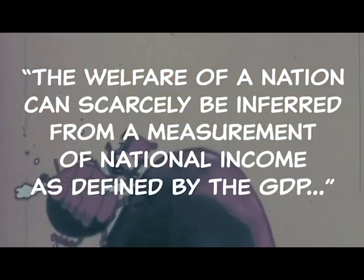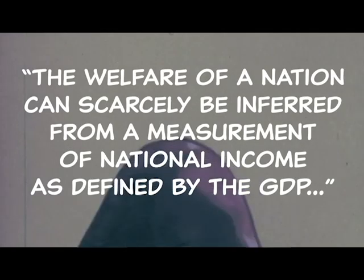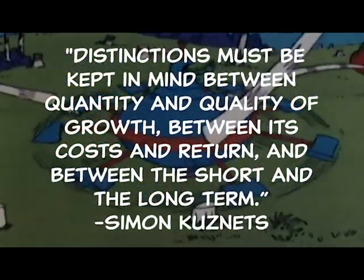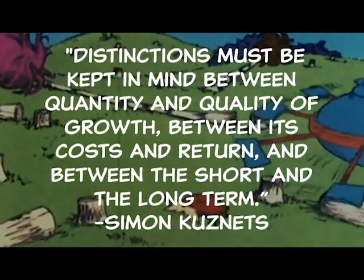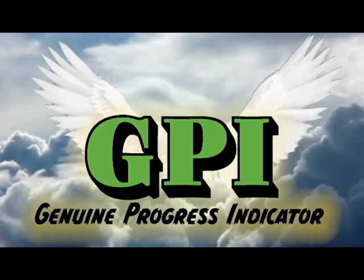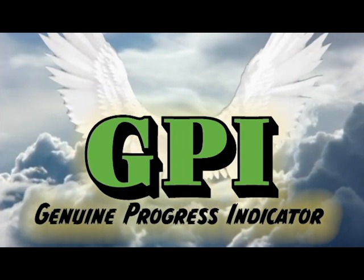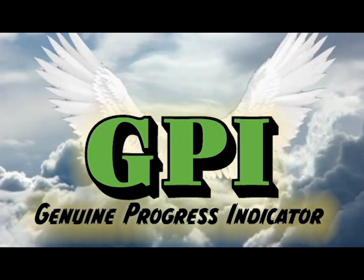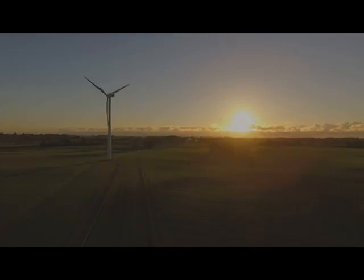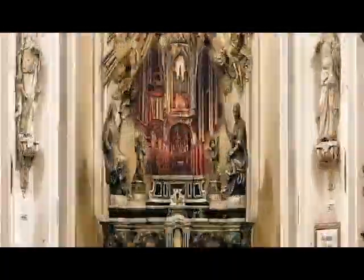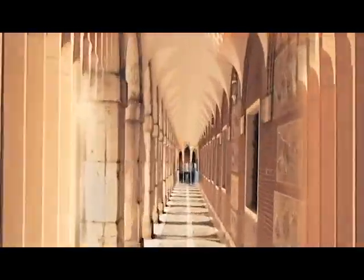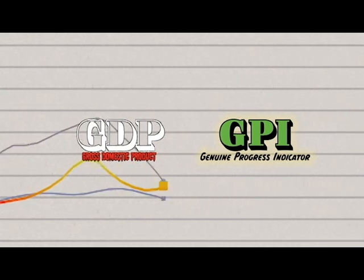The deficiencies in the gross domestic product were being identified by a number of people. The original inventor, Simon Kuznets, identified deficiencies in the gross domestic product as a measurement of economic well-being, and many others identified them throughout the years. In the late 1980s through mid-1990s, what was eventually devised was the Genuine Progress Indicator — a singular indicator that could replace the gross domestic product as a more accurate measurement of overall well-being. And so that is where we are today.